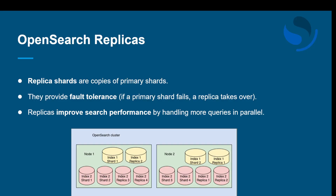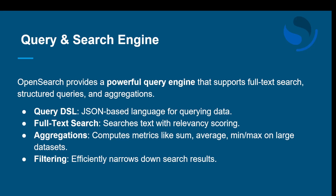OpenSearch replicas are copies of primary shards. They help in case of failures — if a primary shard fails, the replica takes over. Replicas also improve search performance by handling many queries in parallel, speeding up search by sharing the load. As seen in the picture, each index has a corresponding replica, providing fault tolerance and improved query performance.